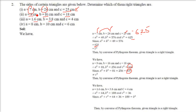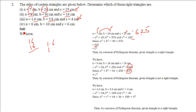Next, we check 1.6 square plus 3.8 square. Computing 1.6 squared gives 2.56, and 3.8 squared gives 14.44.